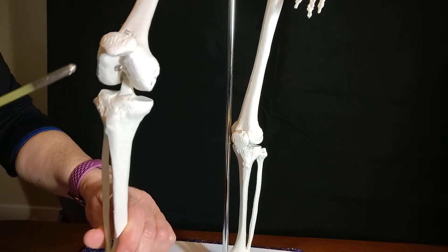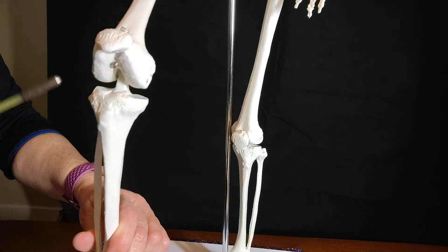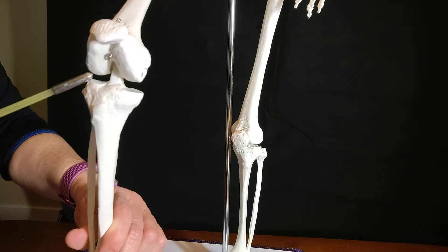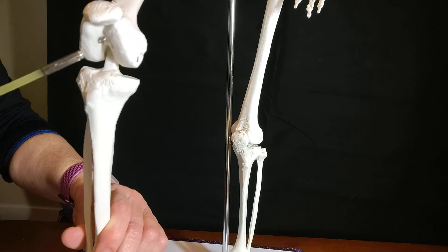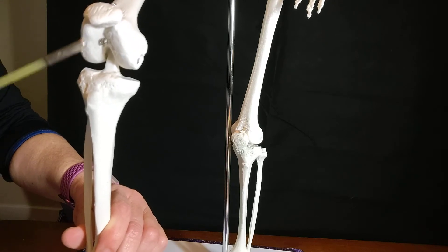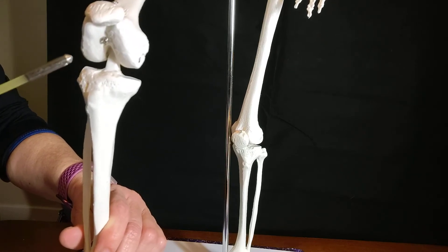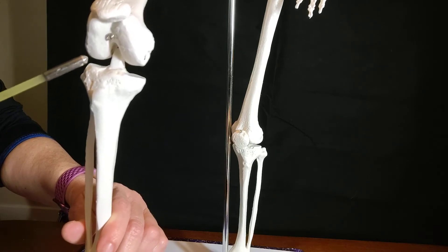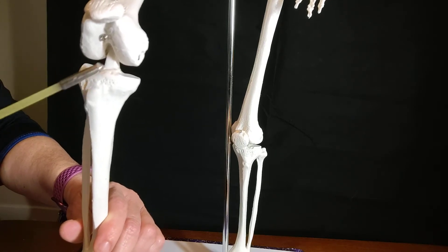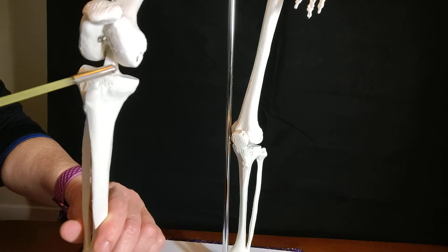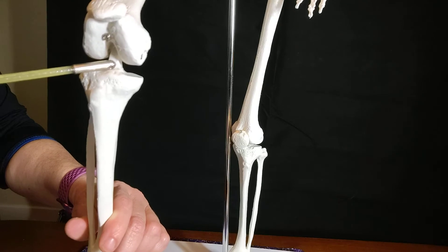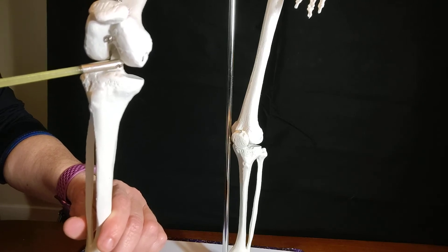So the condyles of the femur articulate with the condyles of the tibia. The articulating surface of the tibia - of course the condyles are convex and the tibia is concave slightly. The condyles of the tibia, the flat part on the top is what's known as the tibial plateau, and the little point in the middle is known as the intercondylar eminence.